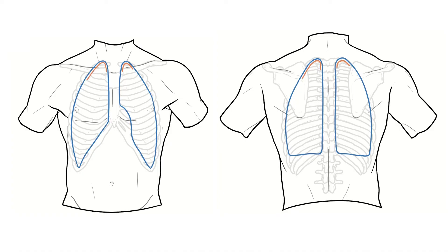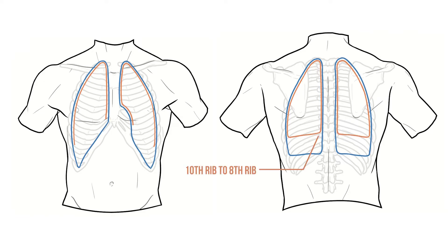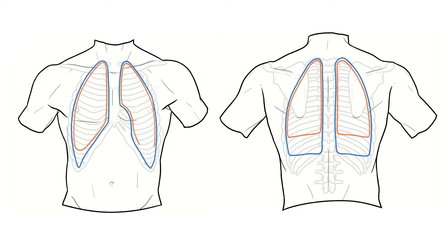Heading inferiorly, the lungs follow the borders of the costal and mediastinal membranes pretty closely, however they stop around 2 ribs short of reaching the diaphragmatic pleura. So posteriorly they pass from the 10th rib medially to the 8th rib laterally. Anteriorly they cross the midclavicular line at the level of the 6th rib, before following the costal cartilage to meet the mediastinal pleura.